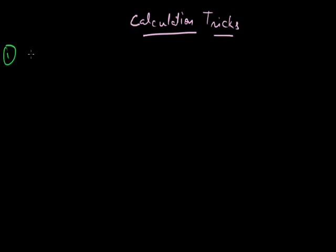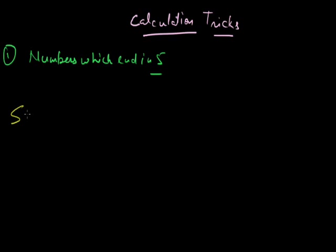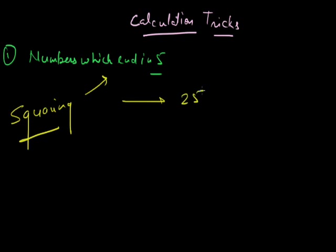Let's discuss about numbers which end in 5. We are discussing about squaring numbers — specifically squaring numbers which end with 5. Let's take an example: 25. 25 squared is 625. Now, 5 squared is 25.